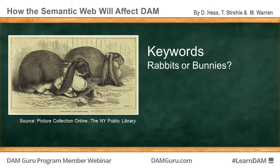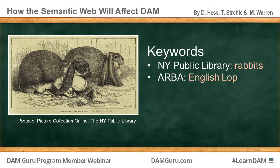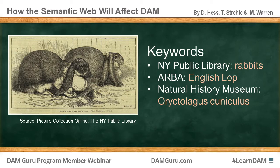This image came from the New York Public Library, and it did come with metadata from the library. They do in fact use the word rabbits to describe this image — that means their vocabulary is agreeing with my own vocabulary. However, if I had gotten this image from the American Rabbit Breeders Association, they would not have labeled this as simply rabbits, because that's too general a term for them. They probably would have used a term like English lops to describe the breed. And if I had gotten this image from the Natural History Museum, I probably would have gotten the scientific name for the European rabbit.